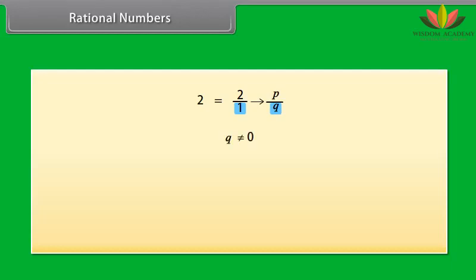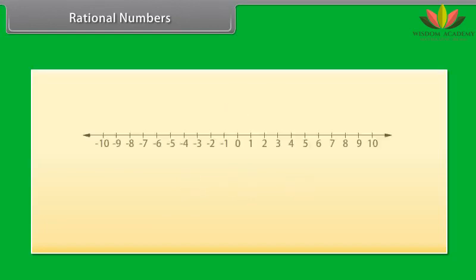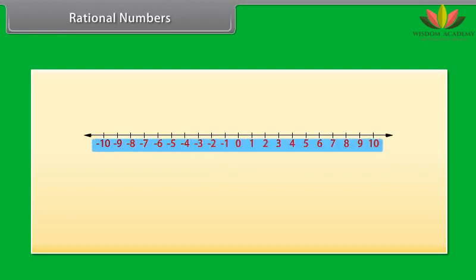In the same way, 10, minus 10, minus 25, etc. are also rational numbers. Therefore, we can say that rational numbers include natural numbers, whole numbers, and integers.